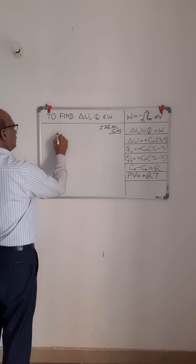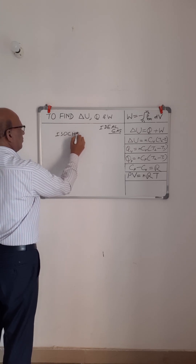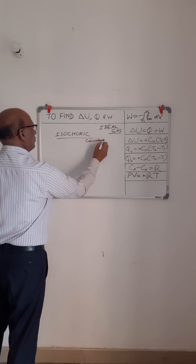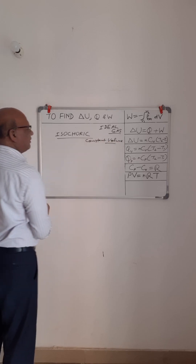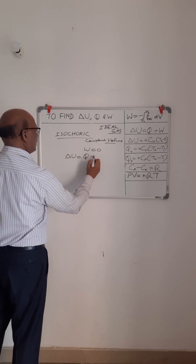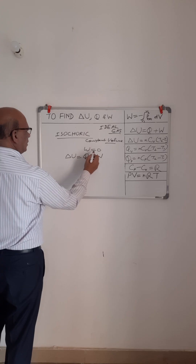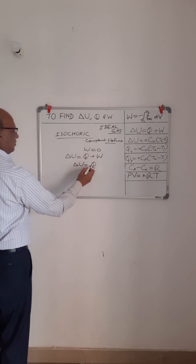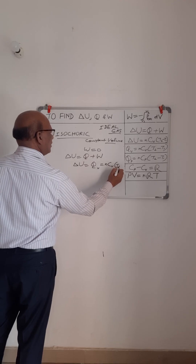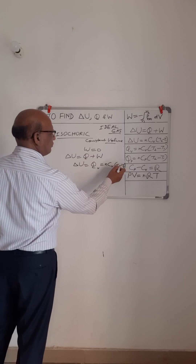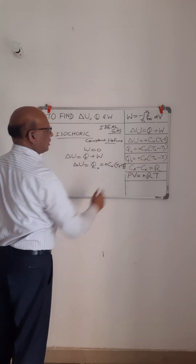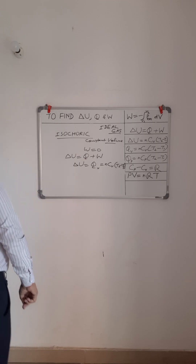Now let's take the isochoric process first. This is a constant volume process, and when volume is constant, work done is zero. Applying the first law of thermodynamics — delta U equals Q plus W — since W is zero, delta U equals Q. So at constant volume, heat added equals NcV(T2 minus T1), where T2 is the final temperature and T1 is the initial temperature. This is the same equation valid for all processes, including the isochoric process.